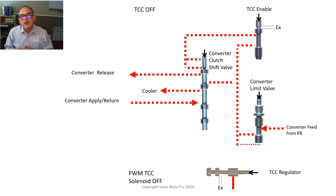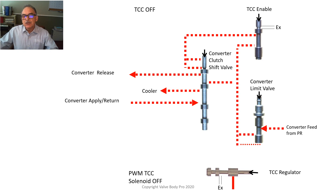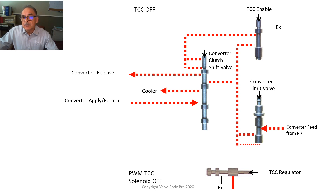As the transmission control module sees that all the parameters are right to engage the torque converter clutch, it applies the clutch in two stages. First, it pulse width modulates the TCC solenoid about 30 to 40 percent. That's not enough to stroke the TCC regulated valve to start regulating, but it does produce enough solenoid oil pressure to stroke the clutch shift valve and the TCC enabled valve.